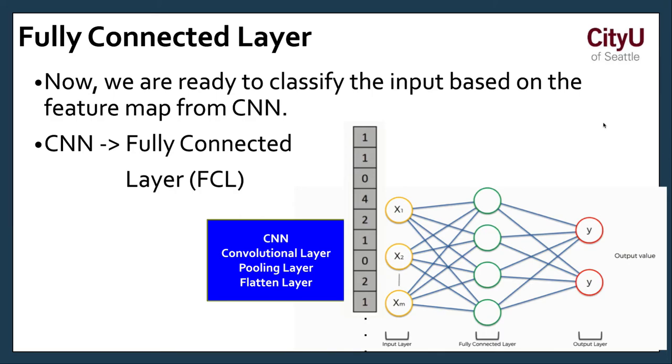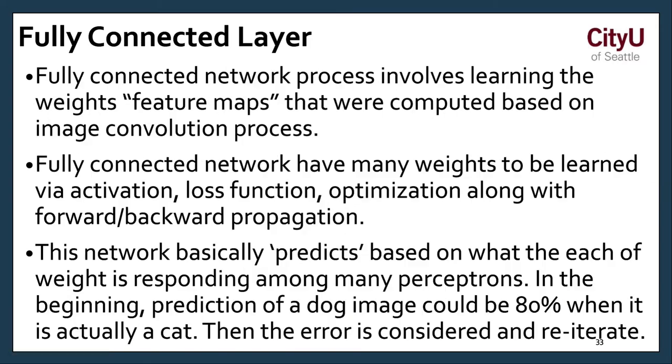The fully connected layer. Input layer. Now we are ready to classify the input based on the feature map from the convolution neural network. We can now start putting things together and generate that output. Fully connected network process involves learning the weights of the feature maps that were computed based on the image convolution process. Remember, we were filtering and maybe getting the edges or textures. The fully connected network have many weights to be learned via the activation loss function and optimization along with the forward-backward propagation. Keep updating that training. This network basically predicts based on what each of the weights is responding along to the perceptrons. In the beginning, prediction of a dog image could be 80% when it is actually a cat. Then the error is considered and then re-iterate.